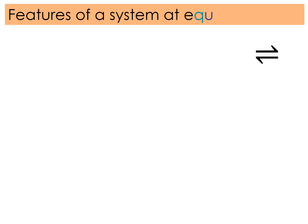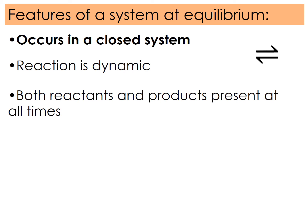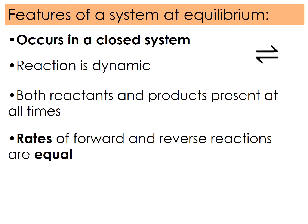So the first of the criteria or features of a system at equilibrium is it occurs in a closed system. The second one is that the reaction is dynamic. That means that the forwards and reverse reactions are both happening all the time. Because that's true, it follows that both the reactants and the products have to be present at all times. And importantly, at equilibrium, the rate of the forward and reverse reactions are equal.